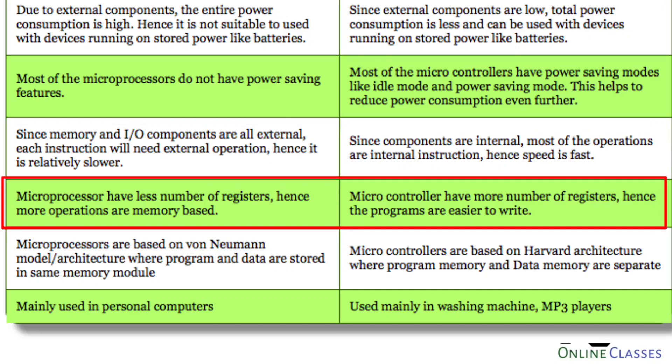Microprocessors have fewer registers, so more operations are memory-based. Microcontrollers have more registers available internally. If you have more internal registers available, it is easier to write the program.